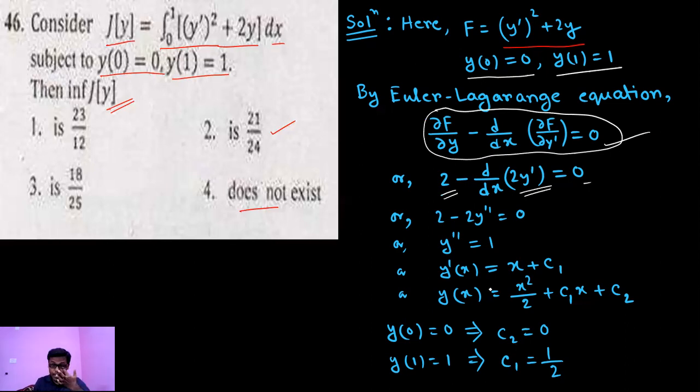And simplifying this, we are getting y(x) equals to x²/2 plus c₁x plus c₂ and c₁, c₂ are arbitrary constants.